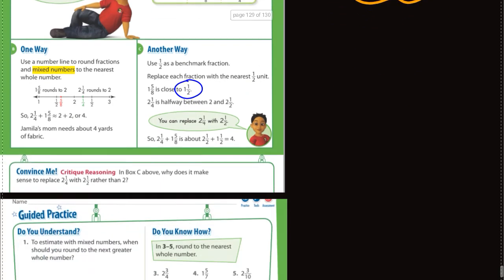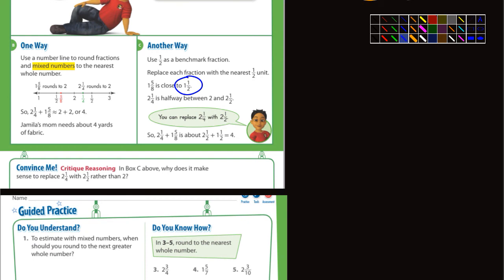So let's see here. Convince me. What's the question here? In box C above, why does it make sense to replace 2 1/4 with 2 1/2 rather than 2? Well, to make sure she has enough fabric. In other words, you'd want to round up rather than down. That would make more sense.